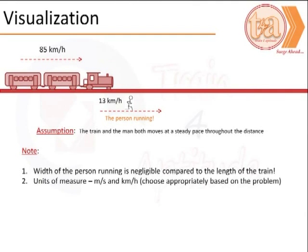The person is also moving at 13 km per hour in the same direction. An important underlying assumption in these kinds of problems is that the train and man both move at a steady pace throughout the distance.